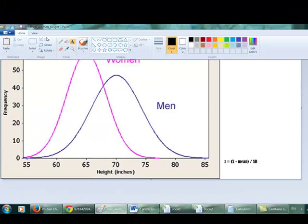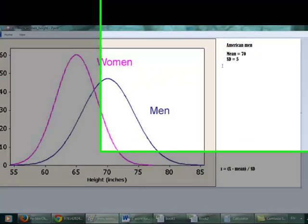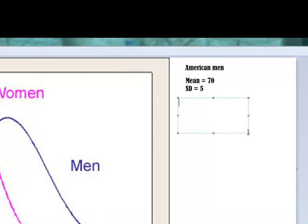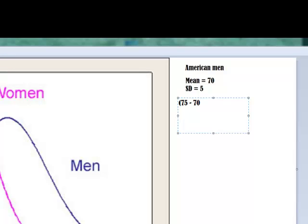So let's try to do that. 75 subtract 70, and then the whole thing divided by 5. So 5 divided by 5. Easy. It should be 1.